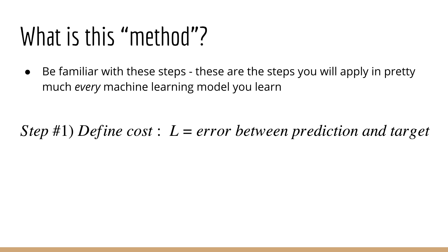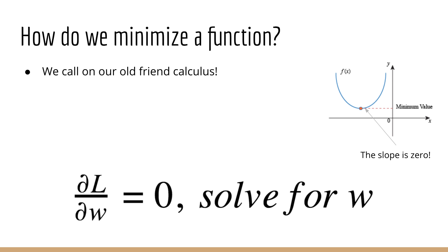As discussed earlier, like any good businessman, your job is to minimize your cost. So step number two is to actually minimize the cost. You can do this by finding out which weights — let's call them w — lead to the lowest cost. The question is: how do we minimize L with respect to the weights w? As usual, we turn to calculus. Whenever you want to minimize or maximize a function, you take its derivative or its gradient with respect to w and set it equal to zero. Then you solve for w. This makes sense because at a minimum or a maximum, the slope is zero.